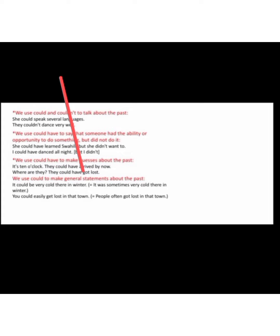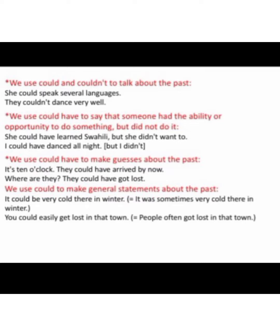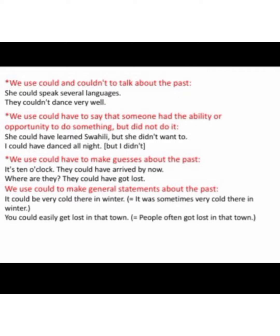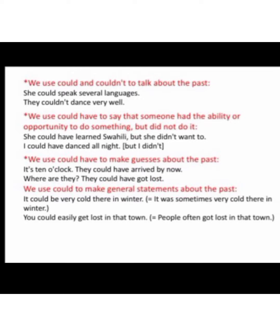Now coming to the usage of could. We use could and could not or couldn't to talk about the past: 'She could speak several languages,' 'They couldn't dance very well.' We use 'could have' to say that someone had the ability or opportunity to do something but did not do it. For example: 'She could have learned Swahili but she didn't want to,' 'I could have danced all night' — but the thing is I didn't.